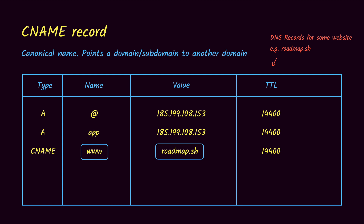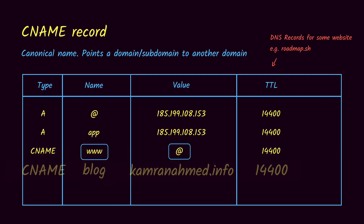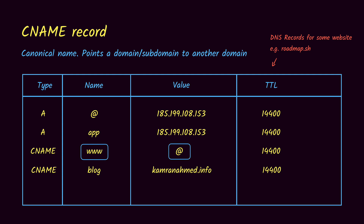Since roadmap.sh is the naked domain we can point it to '@' also. We can also use external domains. For example, if we have blog.roadmap.sh and we want to point it to kamranahmas.info, we take blog as a CNAME pointing to the external domain kamranahmas.info.